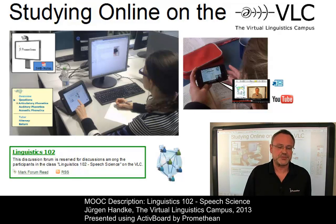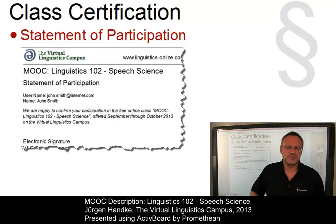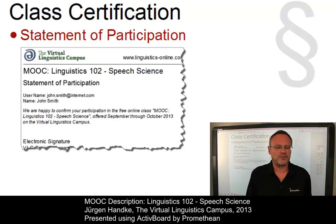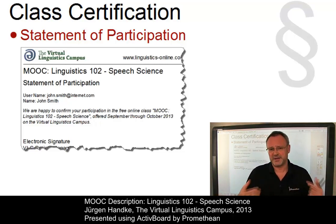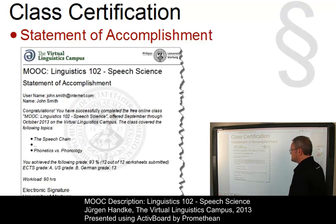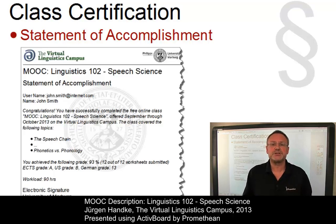And if you are successful, you will be given a certificate. The standard certificate, the so-called statement of participation, is issued by the Virtual Linguistics Campus for regular and active participation. If you want more, you have to invest more work and a very small amount of money. In that case, you will receive a qualified statement of accomplishment issued by Marburg University in conjunction with the Virtual Linguistics Campus.